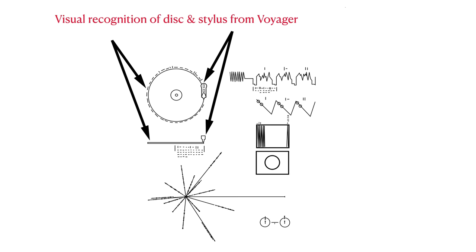We're assuming that the aliens can visualize this two-dimensional image and recognize three-dimensional objects that are on the Voyager spacecraft. So, here we have a stylus that is meant to be used to play the record. The stylus is included on the Voyager spacecraft alongside the golden record.